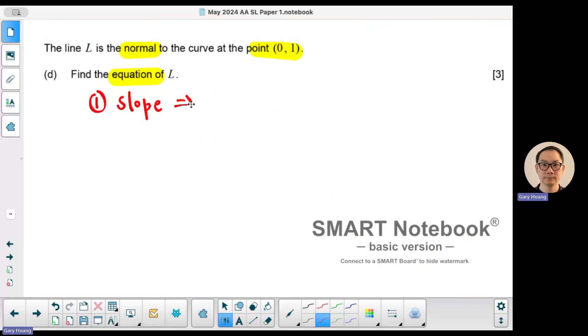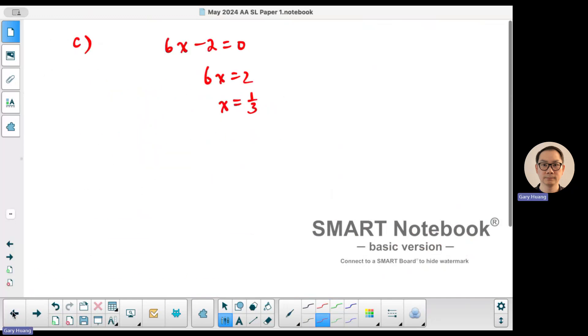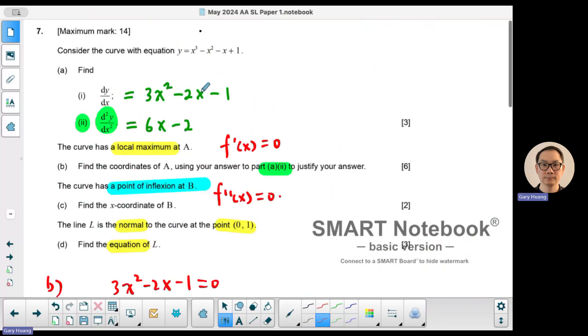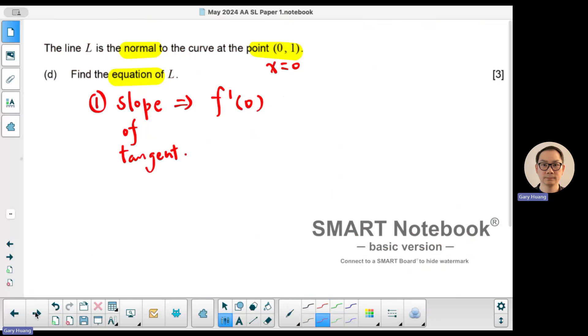The slope is going to be the derivative at zero, x value equal to zero. But this is going to be the slope of a tangent. So what's the derivative function that we calculated? Go back to that page. It's 3x² - 2x - 1. Now, when x is equal to zero, the slope is going to equal to a -1. So you can sub it in, and that's going to equal to a -1.